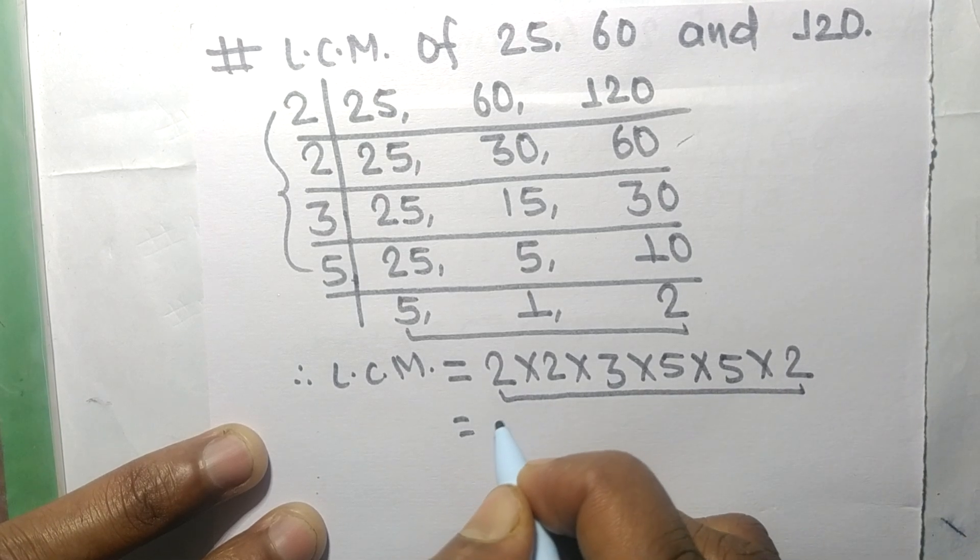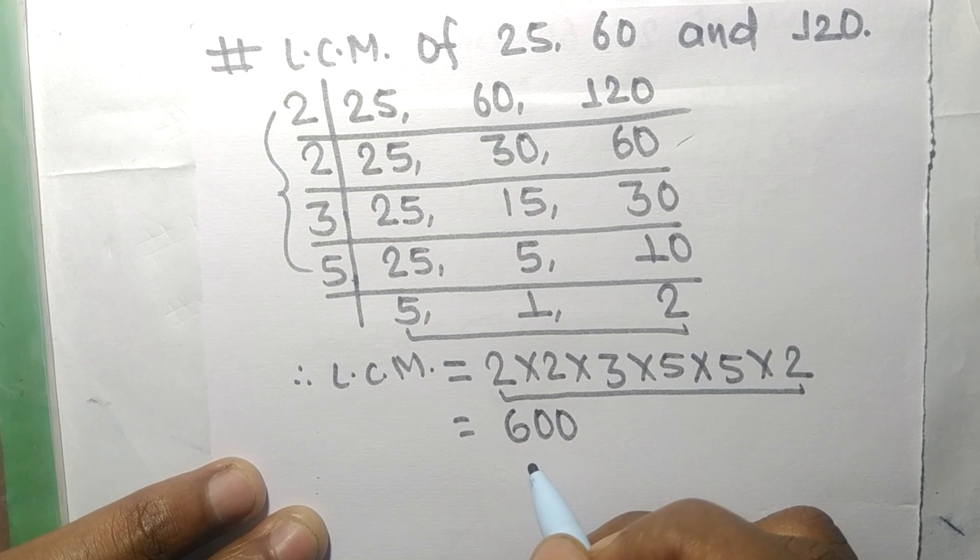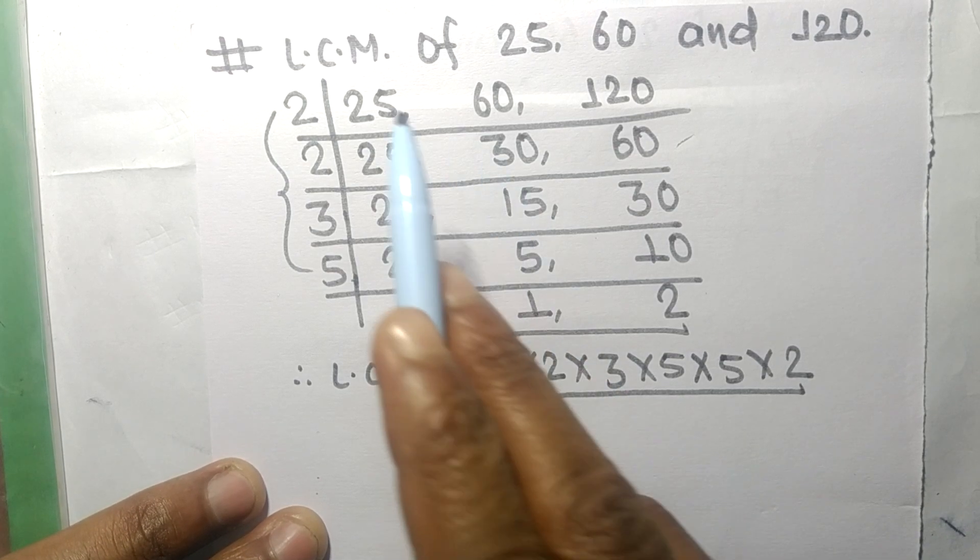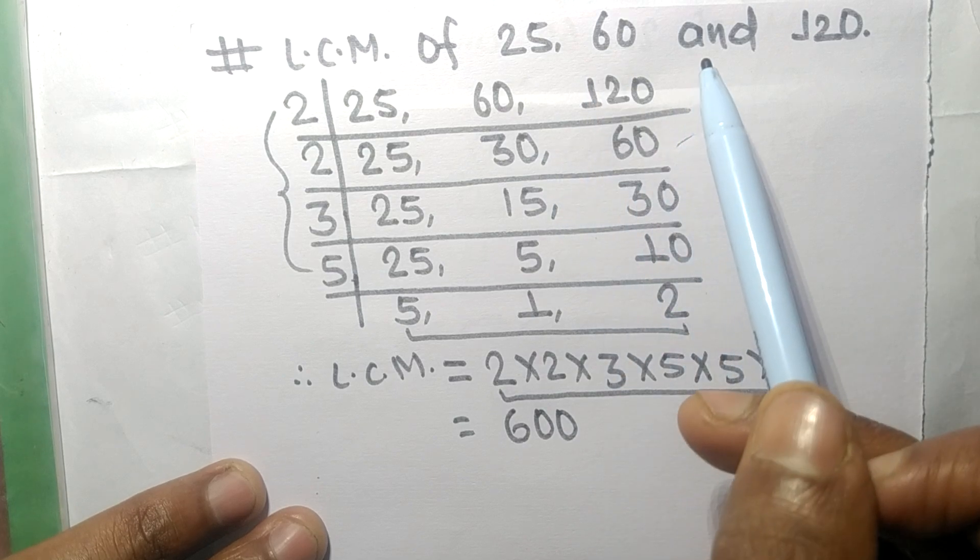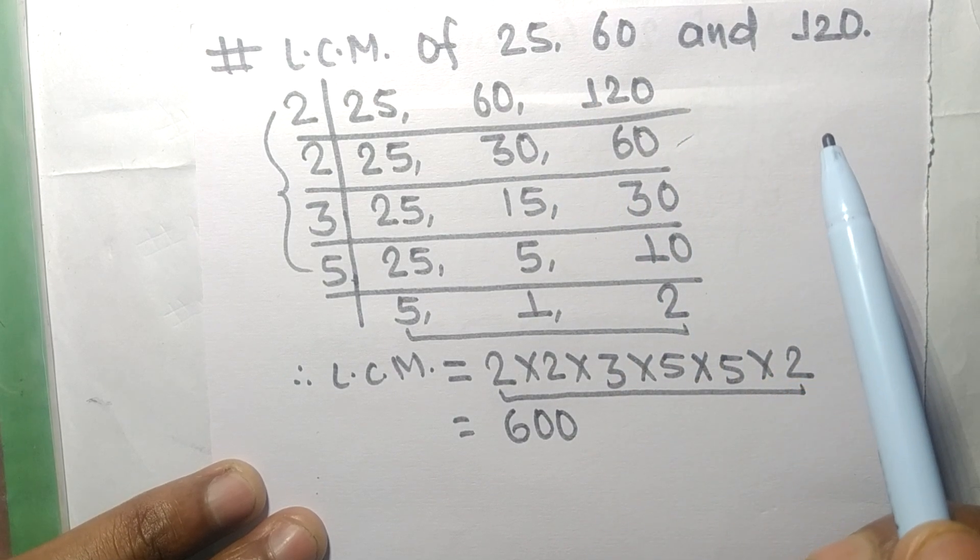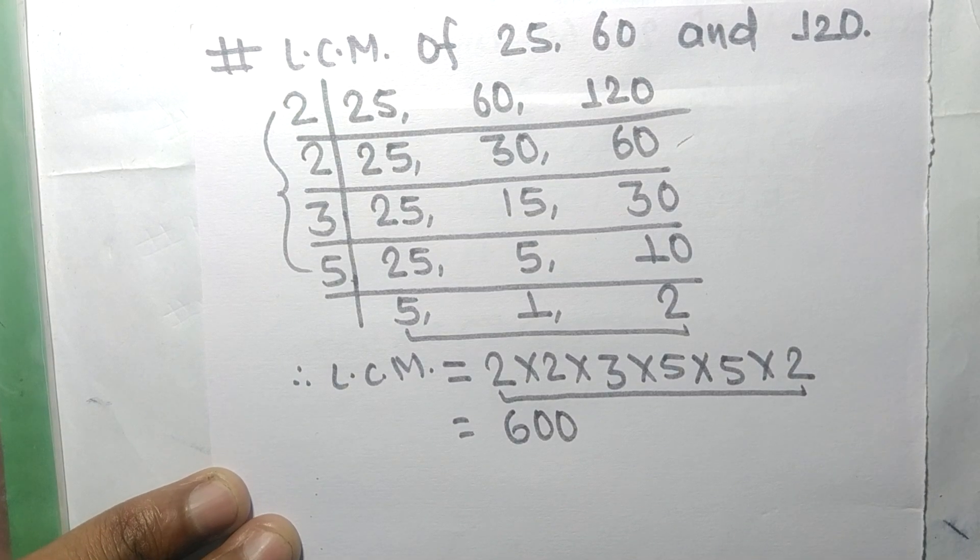So 600 is the LCM of 25, 60 and 120. So this much for today and thanks for watching.